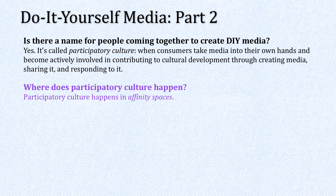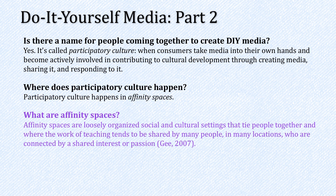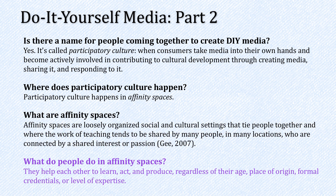Where does participatory culture happen? Participatory culture happens in affinity spaces — loosely organized social and cultural settings that tie people together. People in these spaces teach each other things, formally and informally. There tend to be many people in many locations connected by a shared interest or passion. What do people in affinity spaces actually do? They help each other to learn, act, and produce, regardless of their age, place of origin, formal credentials, or level of expertise.